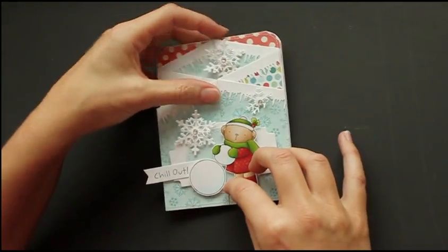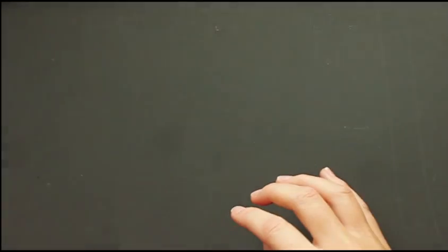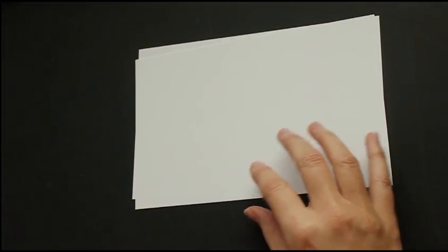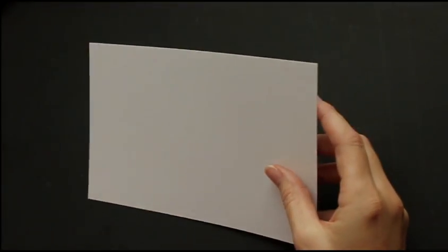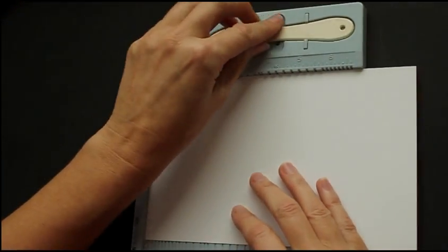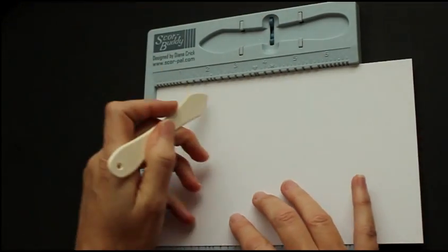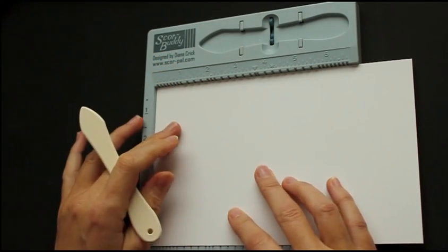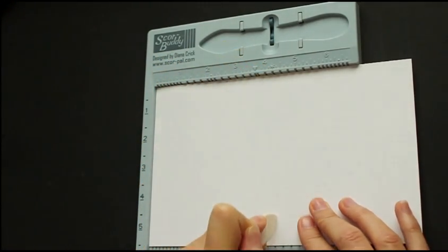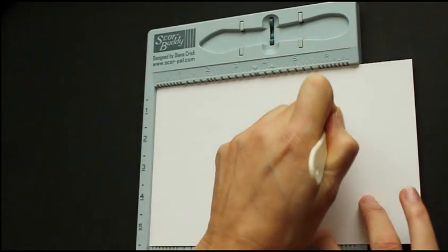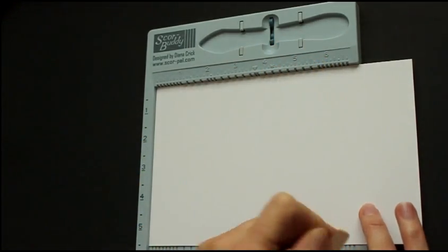First of all, to get your cascading sides, you will need two pieces of 5½ by 8½ pieces of cardstock, and you will take them and score each of them at 2⅛. If you have a score pal or score buddy, it's really easy because the 2⅛ has a dot, the 4¼ has the star, and then the 6⅜ has another dot on top, so it's easy to remember where to score.